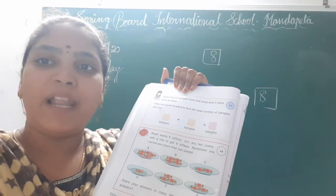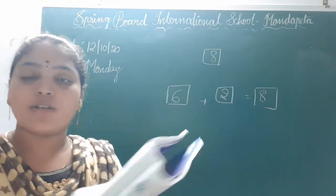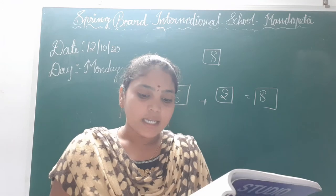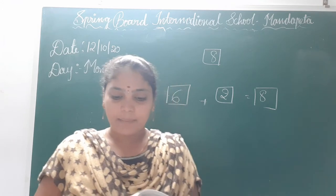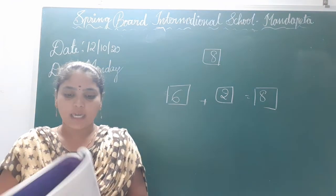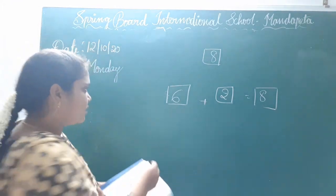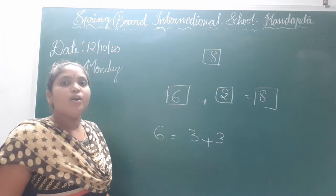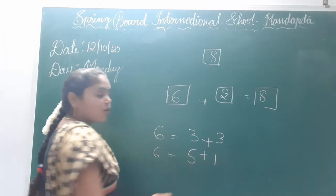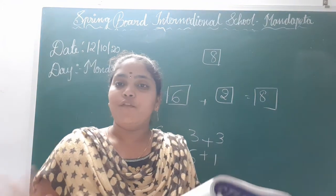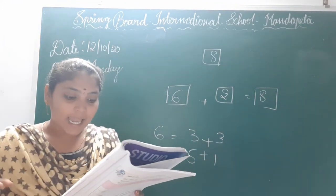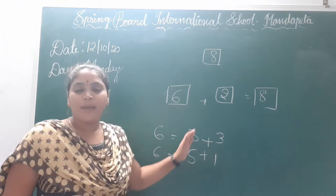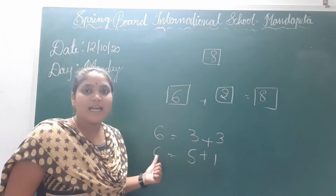Now you have to draw these 2 plates also. Or you can draw 3 plus 3 chocolates also to get the total of 6. Different pairs of plates can be joined to get 6 toffees. In the same way we can get any number by adding different pairs. So 3 plus 3 is 6, and 5 plus 1 is also 6. If we add 2 different pairs we can get the same number.